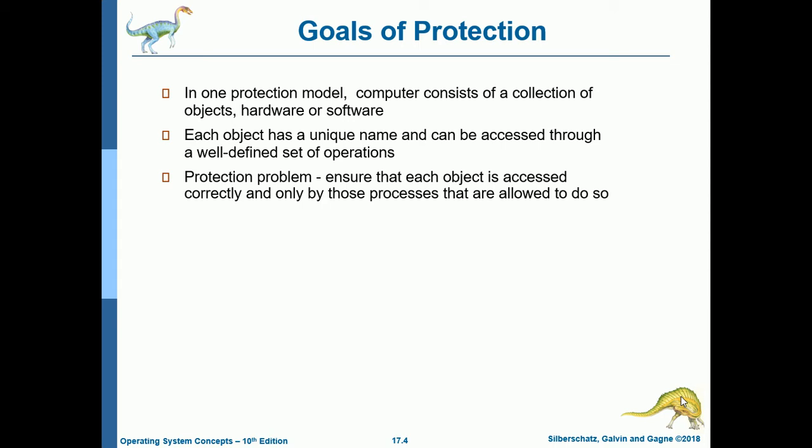The first topic is the goals of protection. In one protection model, a computer consists of a collection of objects, classified as hardware or software. Each object has a unique name and can be accessed through a well-defined set of operations. The protection problem is to ensure that each object is accessed correctly and only by those processes that are allowed to do so.